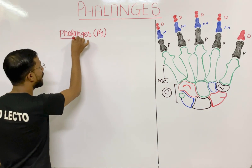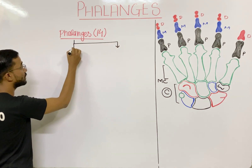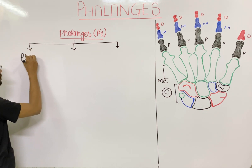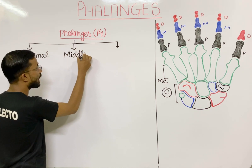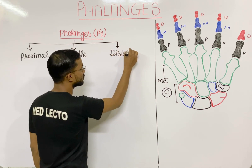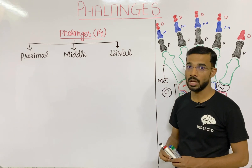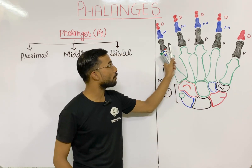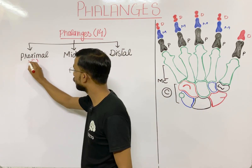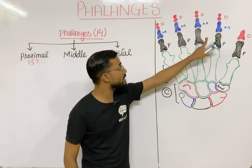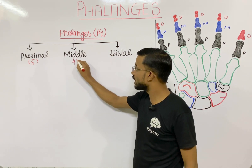We will further categorize phalanges into three types based on location: first is the proximal phalanges, second is the middle, and third is the distal. There are five proximal phalanges in one hand. For the middle phalanges, there are only four — one is missing in the thumb.